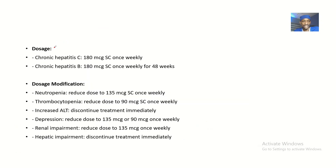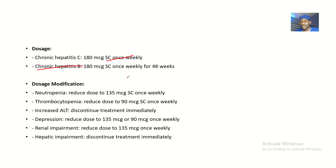Regarding dosage: for chronic hepatitis C, you can give 180 micrograms subcutaneously once weekly. For chronic hepatitis B, you can give 180 micrograms subcutaneously once weekly for 48 weeks — almost 10 months.